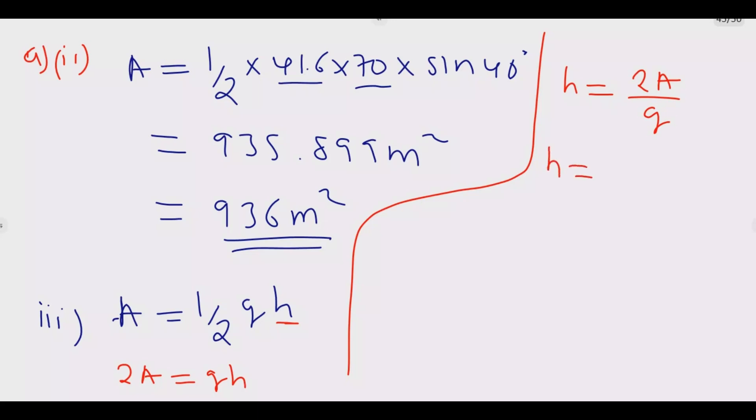H equals 2 times 936 meters squared divided by 70 meters. Using our calculator, we get 26.739964 meters, which is H equals 26.73 meters. This is the shortest distance.